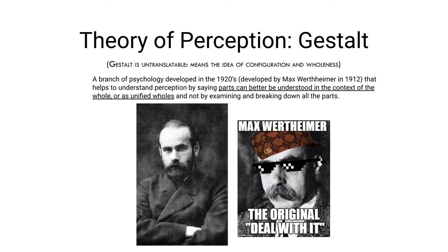The theory of perception comes from a classic psychological theory called gestalt, which some of you guys might have heard of and some might not. The word itself is untranslatable directly to English, but we can understand it by thinking about the idea of configuration and wholeness. Gestalt is a branch of psychology originally developed in the 1920s by Max Wertheimer, who coined the term in 1912. This term helps us understand perception by saying that parts can better be understood in the context of the whole, not by examining and breaking down all of the parts individually.